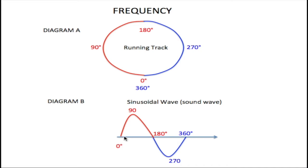Now here we have a circle in diagram A and a sinusoidal wave which is commonly called a sine wave in diagram B. Now you'll see the sine wave goes from 0, 90, 180, 270, 360 just like the circle. So a sine wave was derived from a circle. However, when measuring frequency, we don't use circles, we use sinusoidal waves.